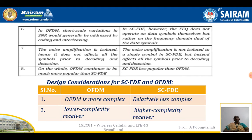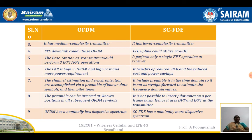Regarding design considerations for SC-FDE and OFDM: OFDM is more complex in design while single carrier FDE is less complex. OFDM has a lower complexity receiver whereas SC-FDE has a highly complex receiver. Both have medium and lower complexity transmitters respectively. The LTE downlink utilizes OFDM, and the LTE uplink utilizes single carrier FDE. The base station as transmitter performs IFFT and FFT operations; it performs only a single FFT operation at the receiver. The peak-to-average ratio is high in OFDM with high cost and more power requirement, whereas SC-FDE has reduced peak-to-average ratio, reduced cost, and power savings.